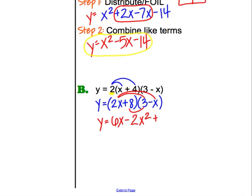Plus 8 times 3, which is plus 24. And plus 8 times negative x, which is minus 8x.